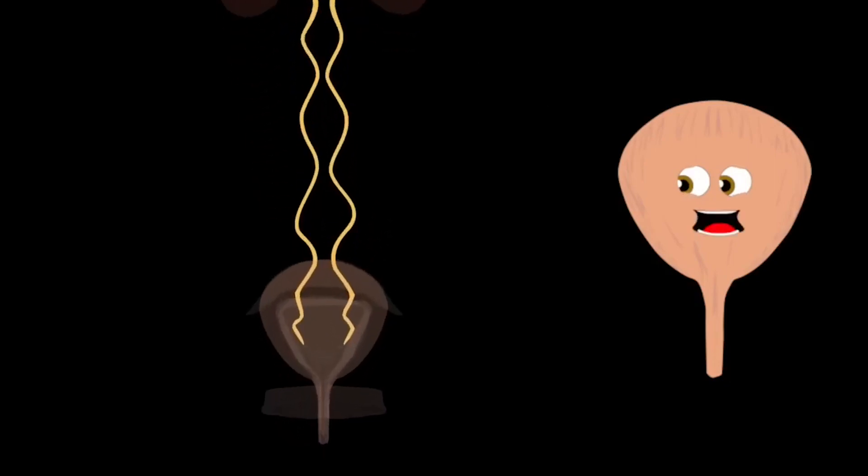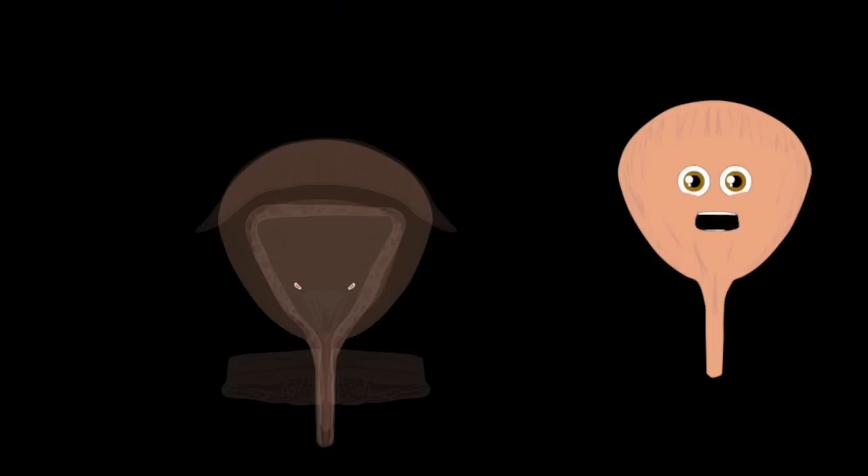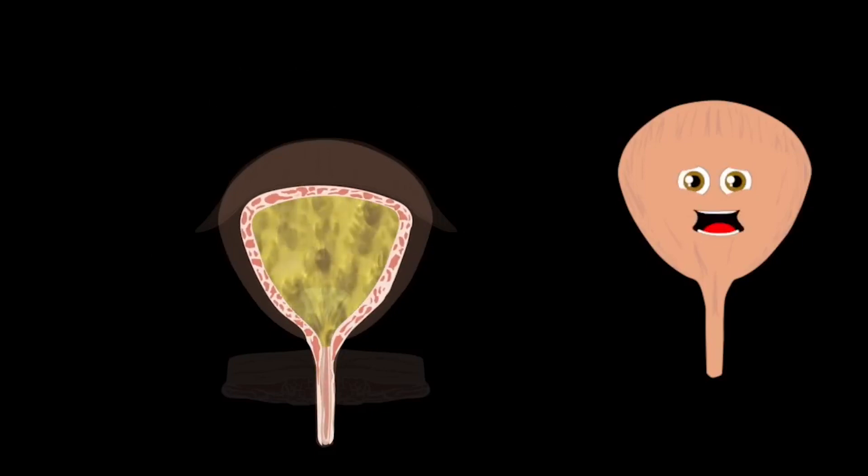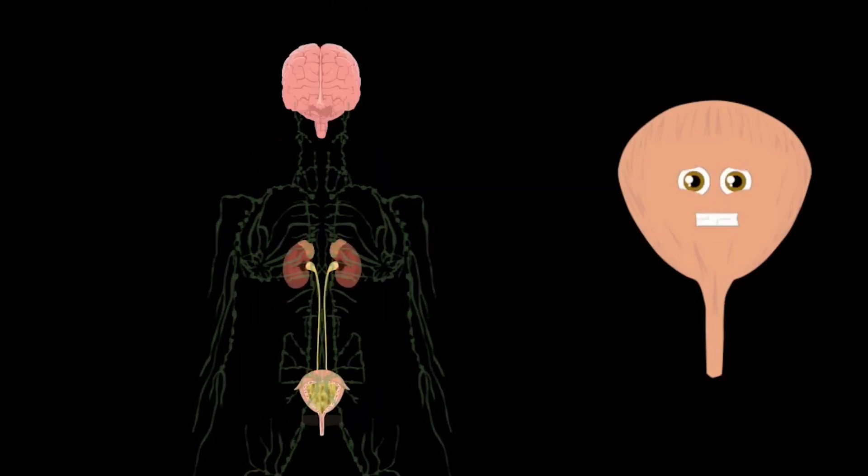When the urine reaches your ureteral opening, the detrusor muscle relaxes while the bladder's filling. When your bladder is full, it stretches its walls. And stretch receptors tell your brain the urine must fall.